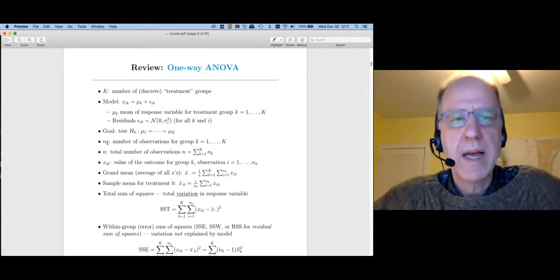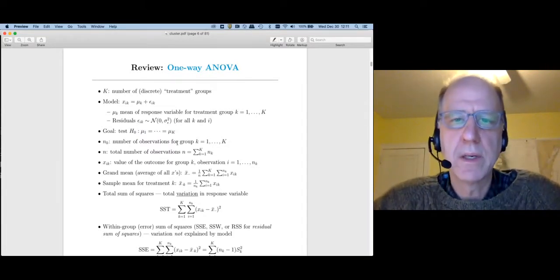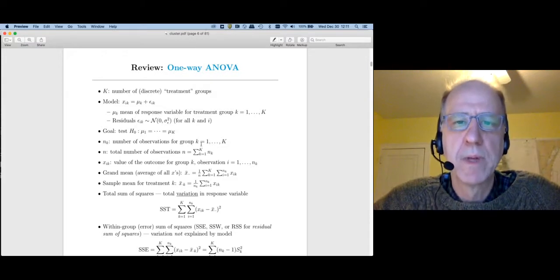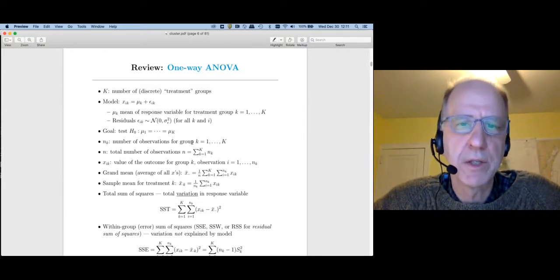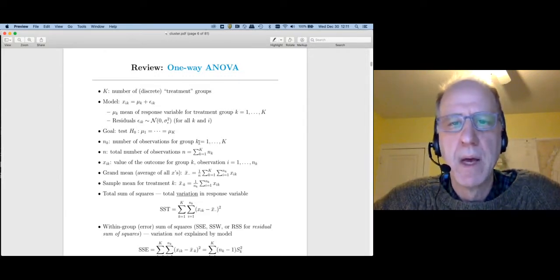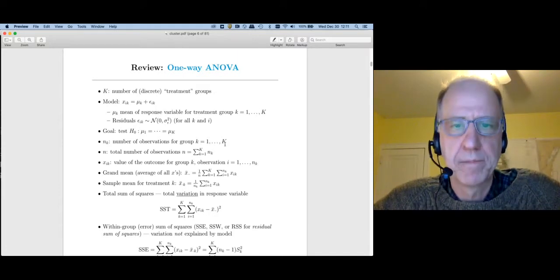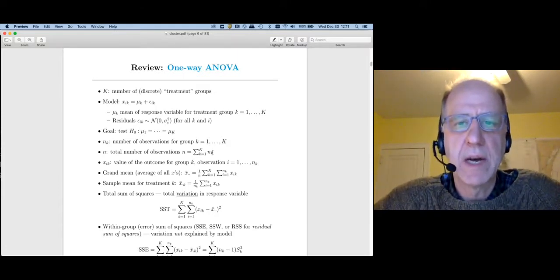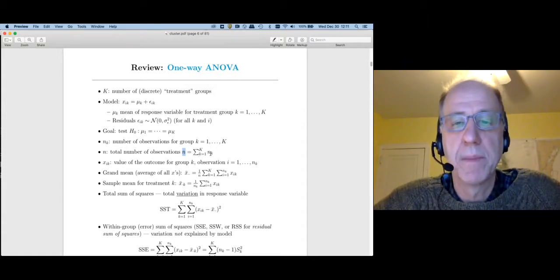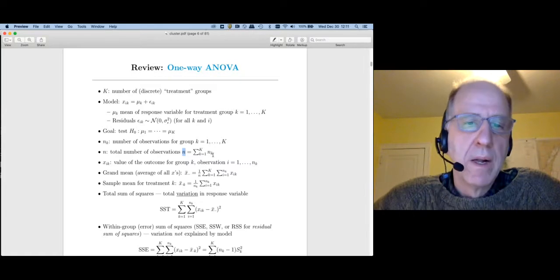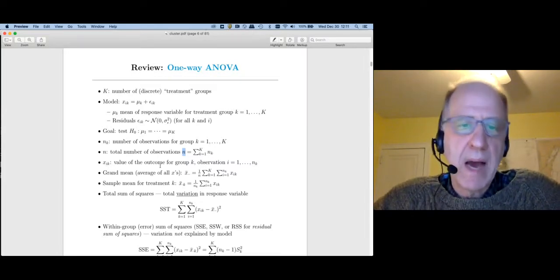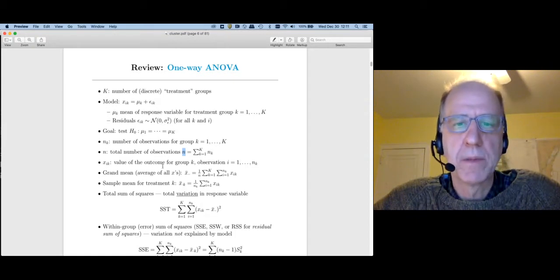I'm going to assume that there are n_k observations in group k. So I'm going to use little k to index groups. We're going to keep using the same convention when we get to clustering. k ranges from one to big K. The total number of observations that I have in the study is going to be little n, so then little n is just going to be the sum of n_k. x_ik will be the outcome or the response variable measurement for observation i ranging from one to n_k in group k.